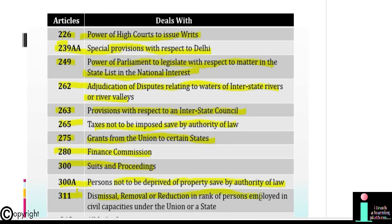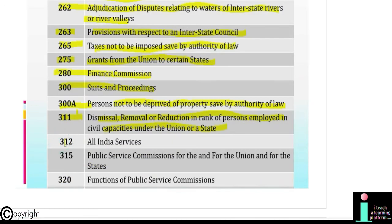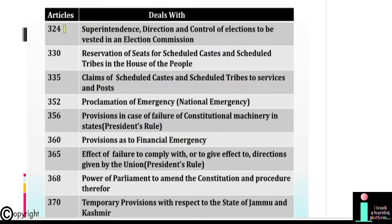Article 300: Suits and proceedings. Article 300A: Persons not to be deprived of property except by authority of law. Article 311: Dismissal, removal or reduction in rank of persons employed in civil capacities under the Union or a state. Article 312: All India Services. Article 315: Public Service Commissions for the Union and for the states. Article 320: Functions of Public Service Commissions. Article 324: Superintendence, direction and control of elections to be vested in an Election Commission. Article 330: Reservation of seats for Scheduled Castes and Scheduled Tribes in the House of the People.